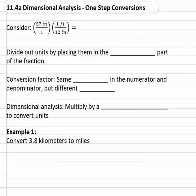Notice we have inches in both the numerator and denominator. That means they can divide out, which means if we multiply across 57 times 1 foot is 57 feet over 1 times 12 which is 12.